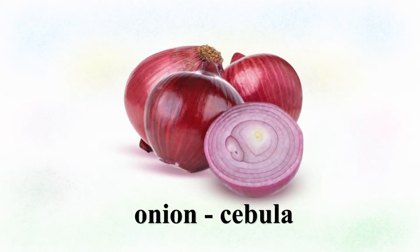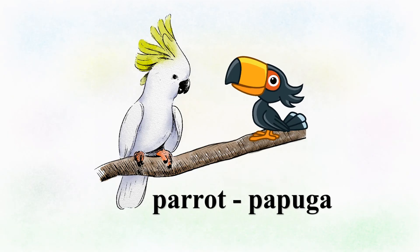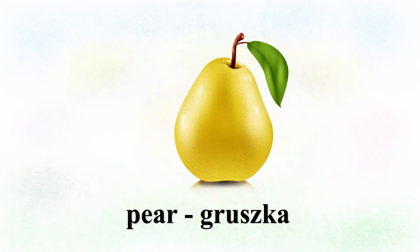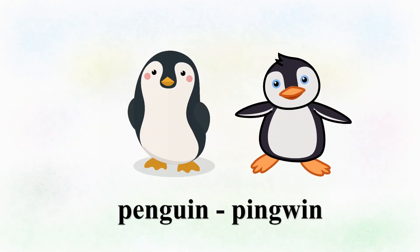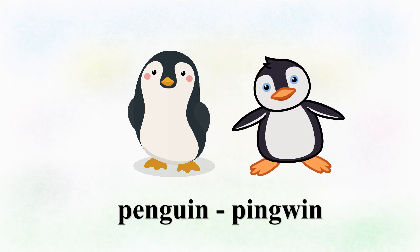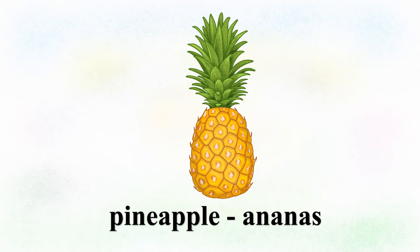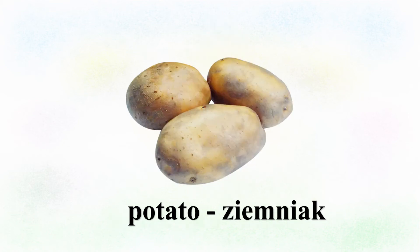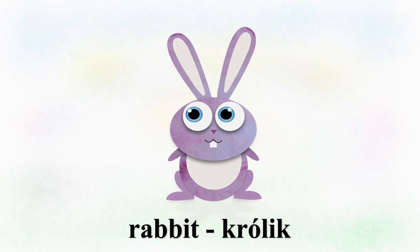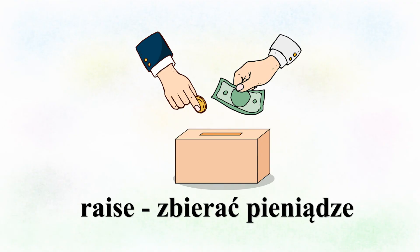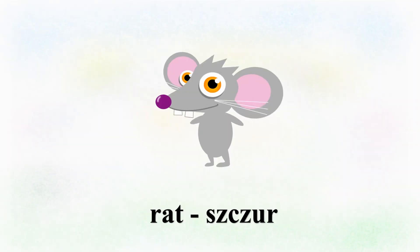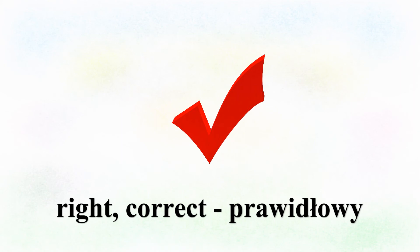Onion. Parrot. Pear. Penguin. Pineapple. Potato. Rabbit. Raise. Rat. Right. Correct.